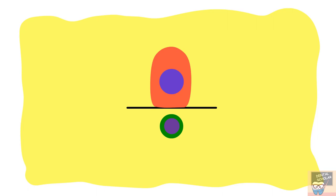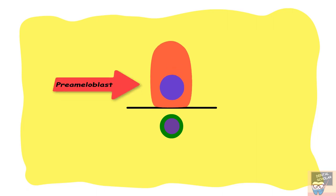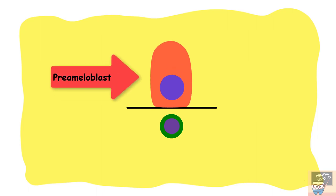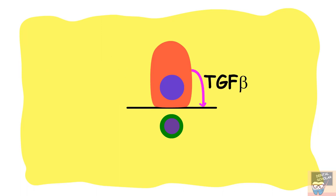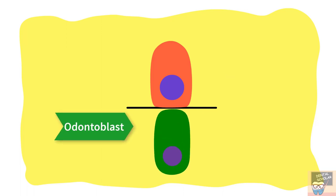The inner enamel epithelial cells in the late bell stage would first elongate and form the preameloblast, and this preameloblast secretes growth factors like TGF-beta into the basement membrane. From there, this growth factor is released into the dental papilla, and here the dental papillary cells, when they uptake this growth factor, would differentiate into the odontoblast.